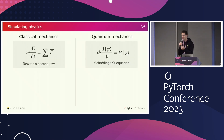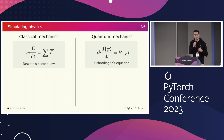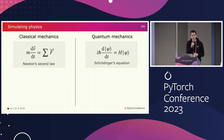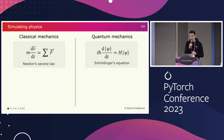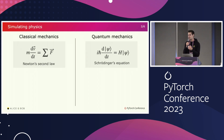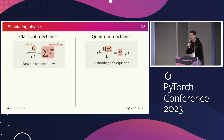What is it that makes it harder to simulate quantum systems? On this slide, you have on the left classical mechanics and Newton's second law, which relates how the momentum of a particle evolves with respect to external forces. On the right, you have quantum mechanics and the Schrödinger equation, which tells you how the state of the system, psi, evolves with the Hamiltonian, which represents the forces on your system. The mathematical structure is very similar in these two equations — they are both ordinary differential equations with respect to time. So this is not what makes quantum mechanics hard to simulate.